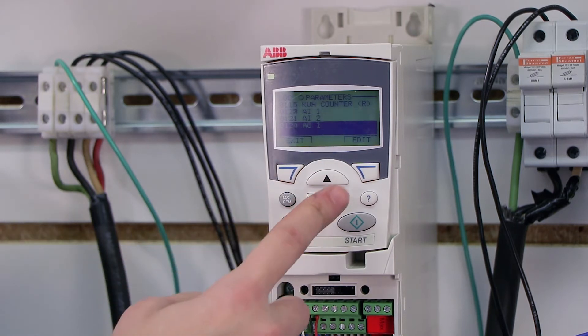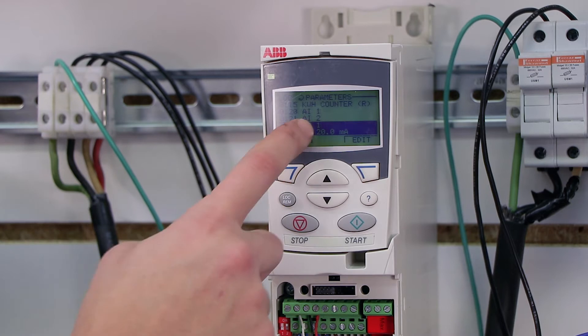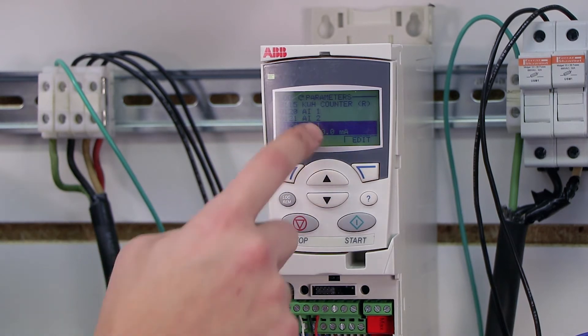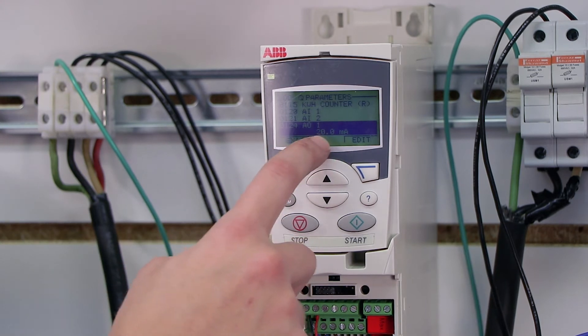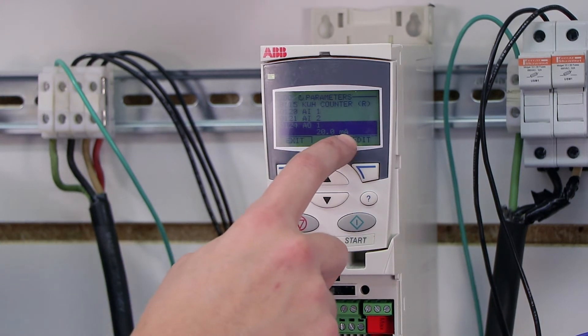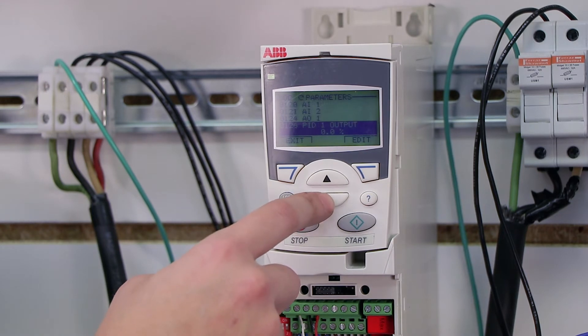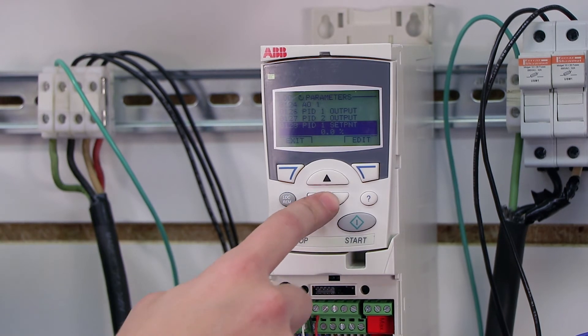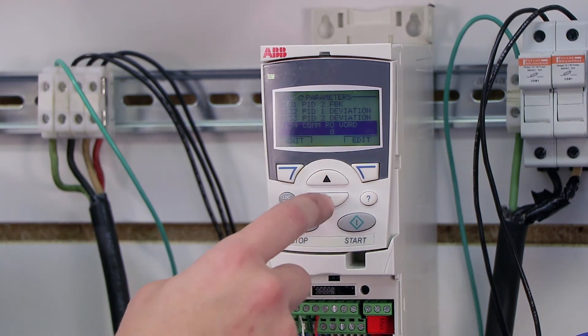Same thing with analog input too. Analog output, if you have the drive programmed for a specific output, that'll let you actually see what that output currently is set at. This one is actually currently outputting 20 milliamps, which is the at speed. So right now I'm at full speed. This is a PID output that only applies if you have a PID loop set up. Same for all these PID outputs. Right now we don't have an actual PID loop setup. That's for like pump and motor control or pressure control.